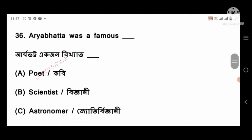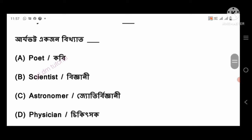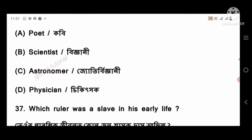Question 36: Aryabhata was a famous — right answer: astronomer, option number C.